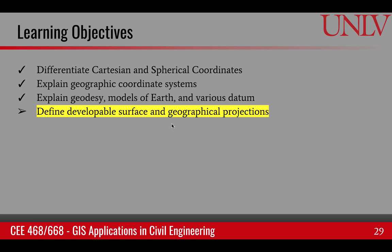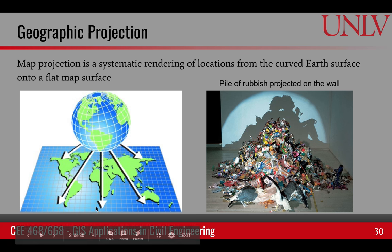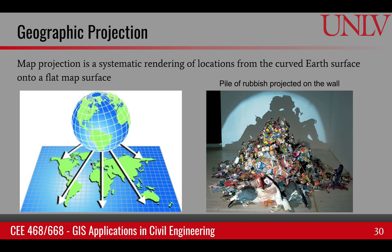The last learning objective of this module is defining a developable surface and relating it to geographical projections. A geographic projection, or map projection, is a systematic rendering of locations from the curved surface of the earth onto a flat map surface. In simple words, if I have a spheroid and I'm interested in putting all of these points on the surface onto a flat sheet of paper, I do it using geographic or map projection.